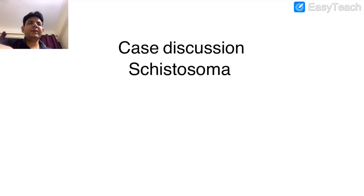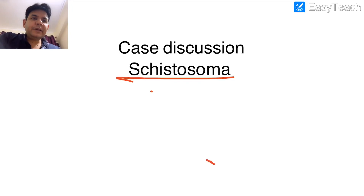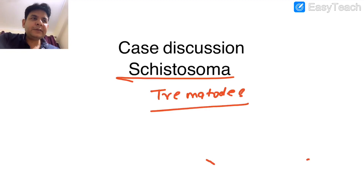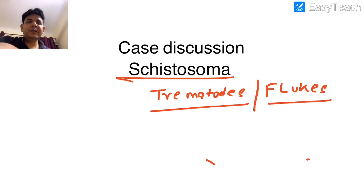Today we'll discuss schistosomes. These are trematodes, also termed flukes. Schistosomes go somewhat as an exception to the general rule of trematodes — let's look at what those exceptions are.